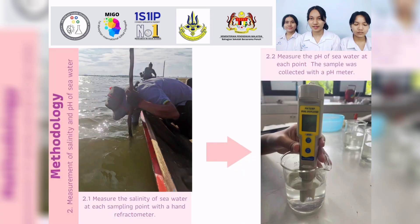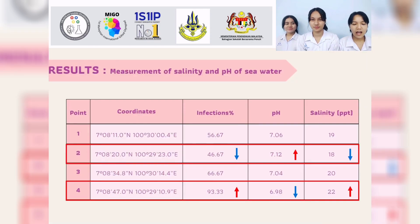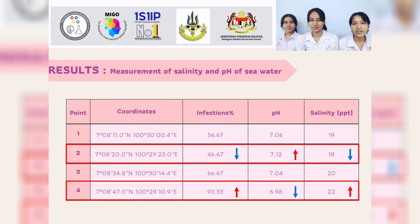The second step: measurement of salinity and pH of seawater. The result is that spot 4, which has the highest infection, has the highest salinity but the lowest pH. And spot 2, which has the lowest infection, has the lowest salinity but the highest pH.